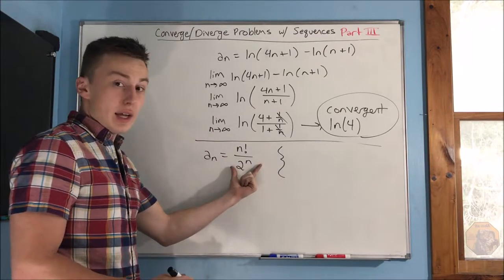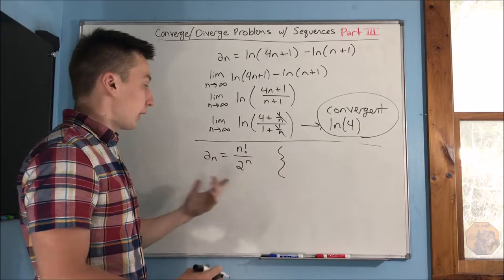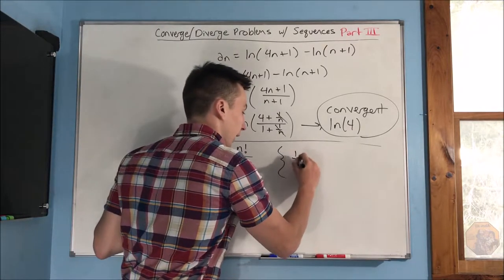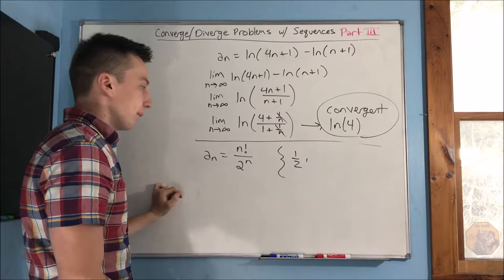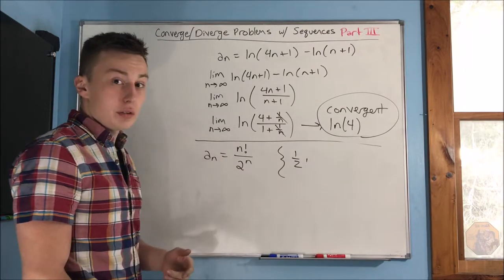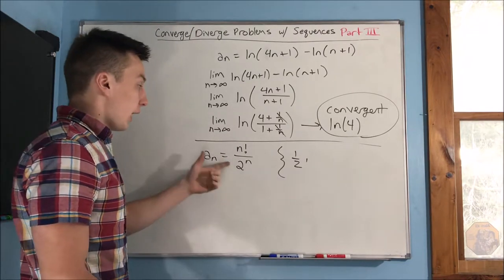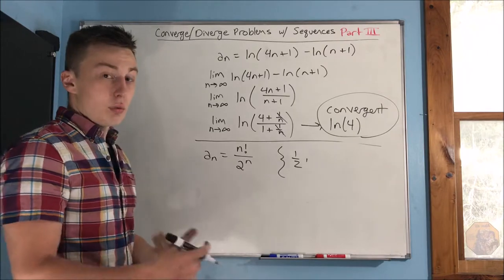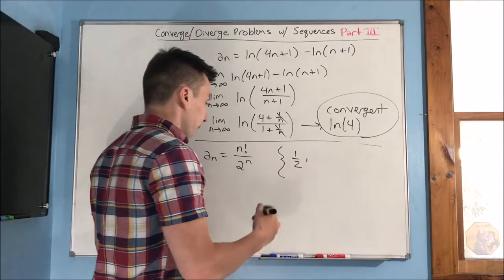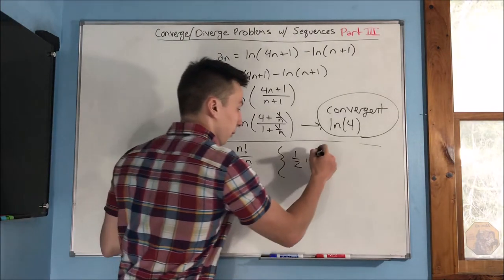And then you have 2 to the n. Well, 2 to the first power, that's just going to be, you're just going to end up with 1 half. Now, what about 2? Well, 2 factorial, that's just going to be 2. And 2 to the n, well, that's going to be 4. So, again, you're going to end up with 1 half.